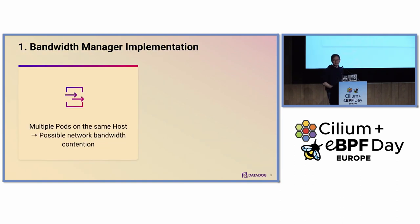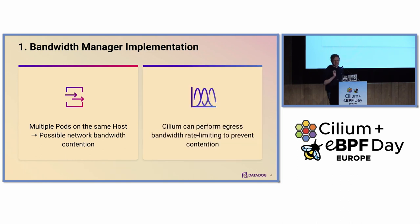I will start with a high-level overview of how Cilium does bandwidth management, and then talk about some interesting lessons we learned while trying to put it in place at Datadog. Why do we need bandwidth management? When we have multiple pods running on the same host, they share the same network bandwidth, which can cause network contention. This is where Cilium comes in with the bandwidth manager feature, which allows us to perform egress bandwidth rate limiting to prevent this kind of contention.